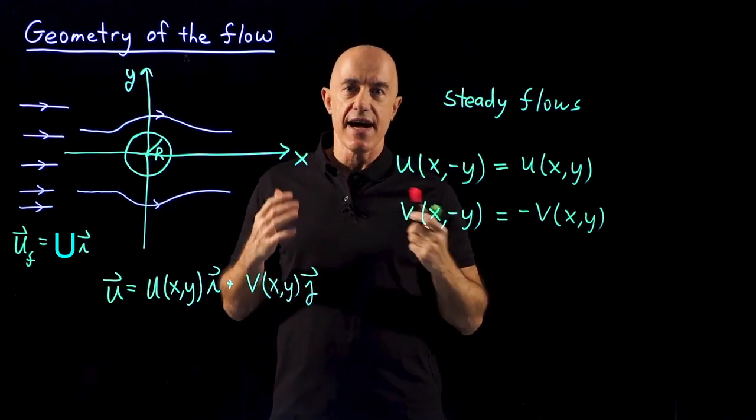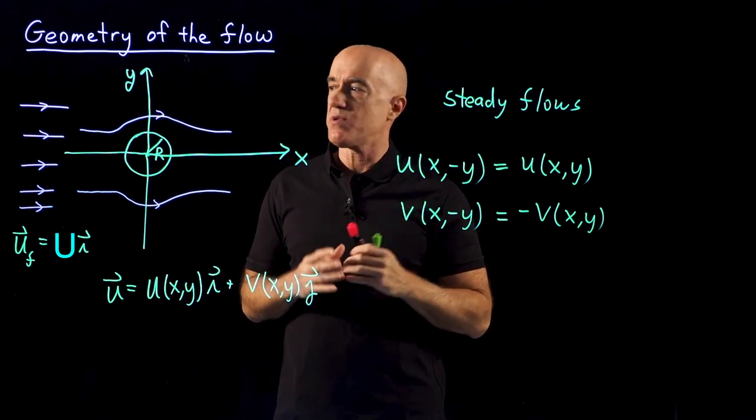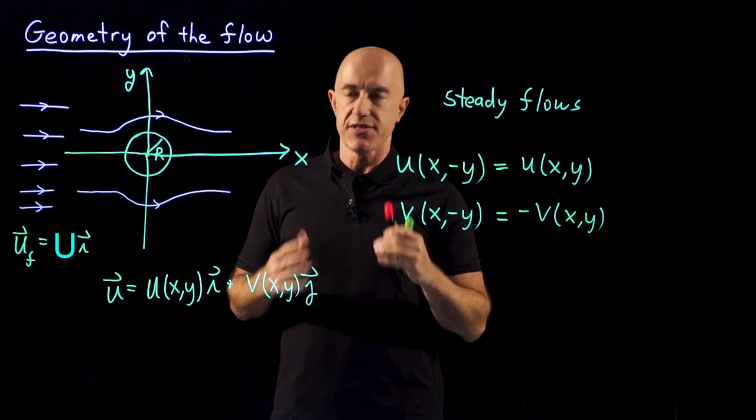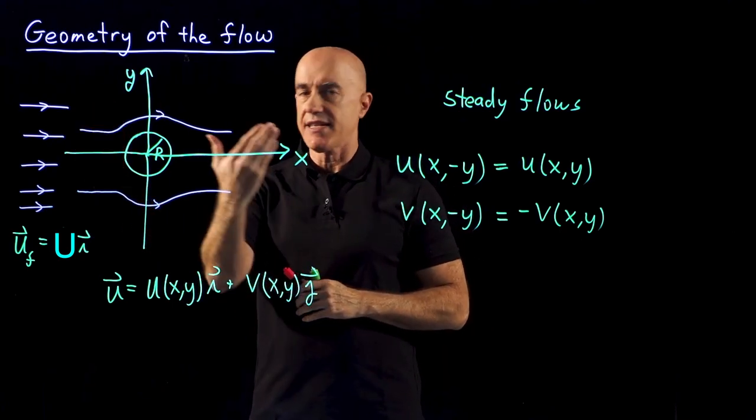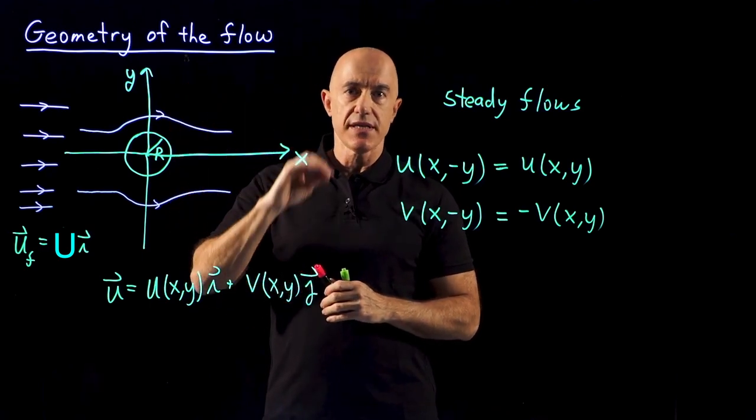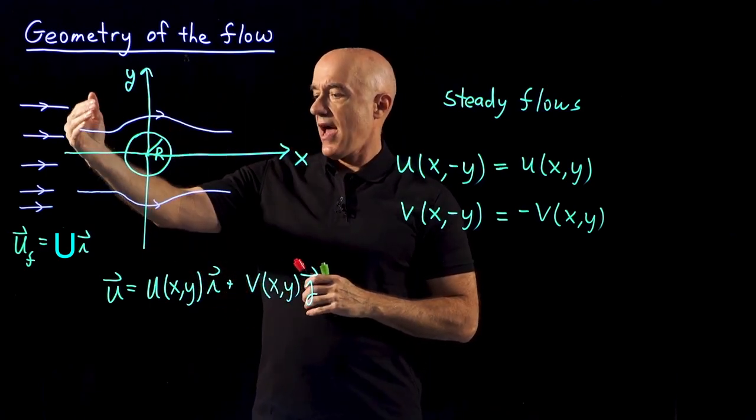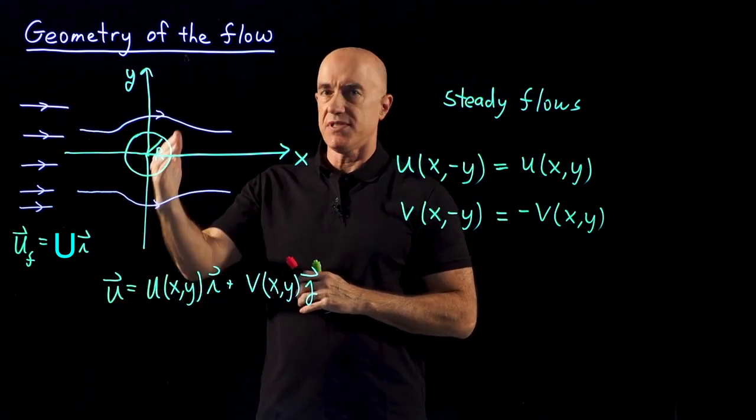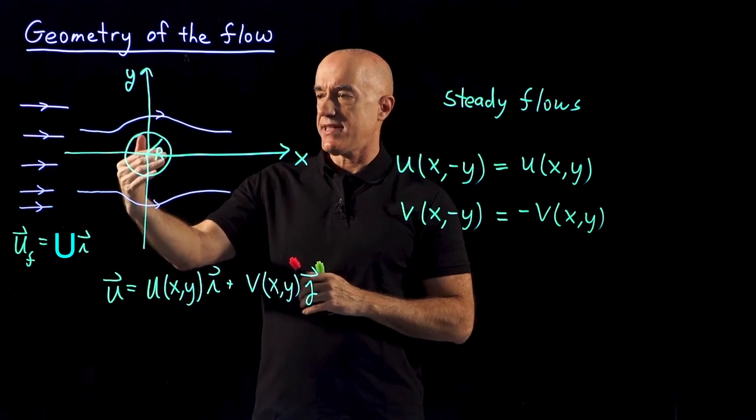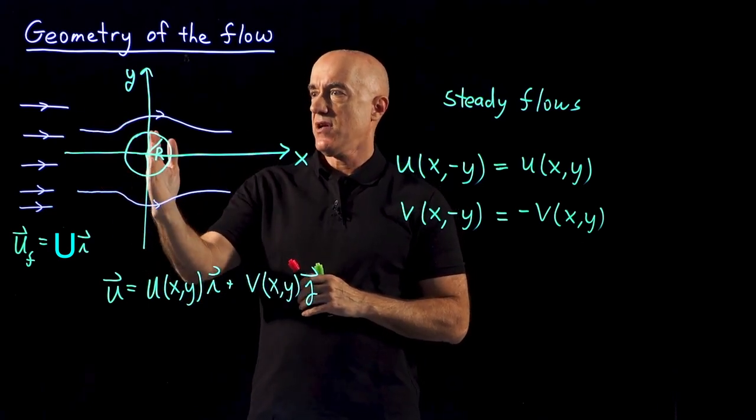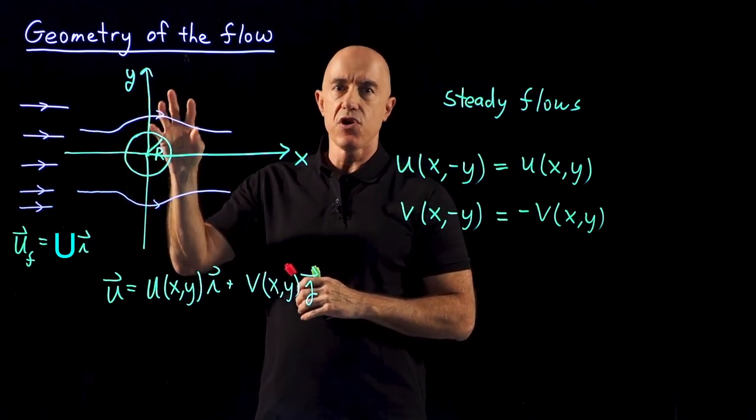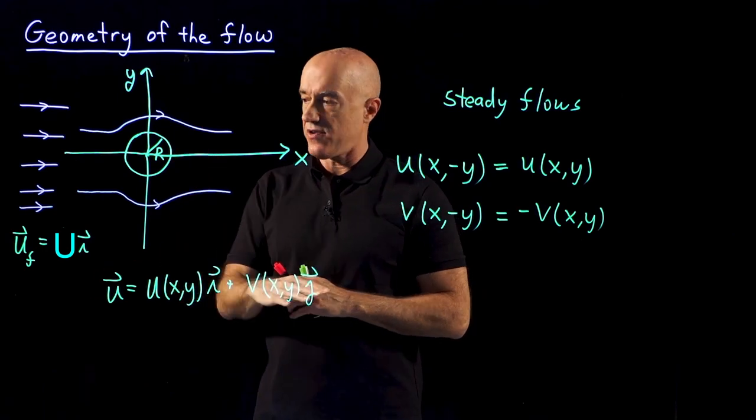We're going to start now to specialize to our particular fluid problem, the flow around an infinite circular cylinder. We're going to look at a cross-section of the cylinder and consider only non-turbulent flows, at which point the velocity field is independent of z and the vector itself only points in either the x direction or the y direction. There's no flow going in or out of the board.